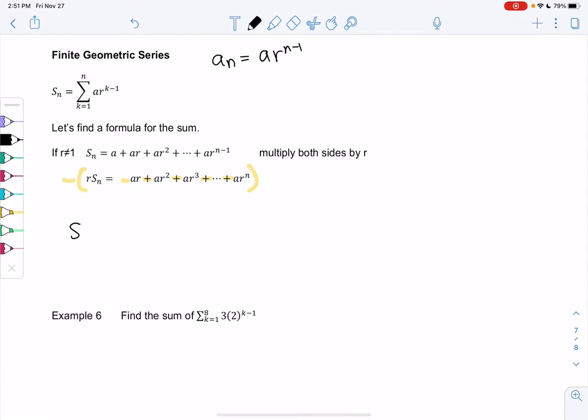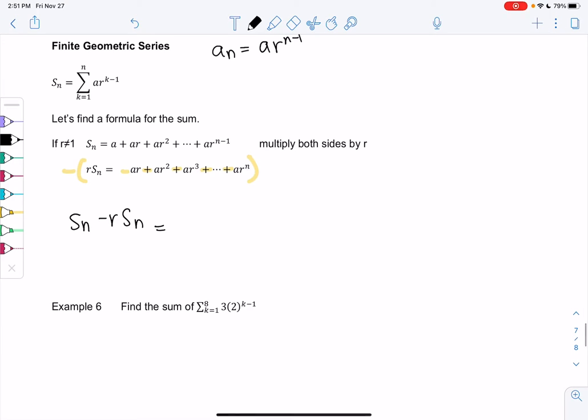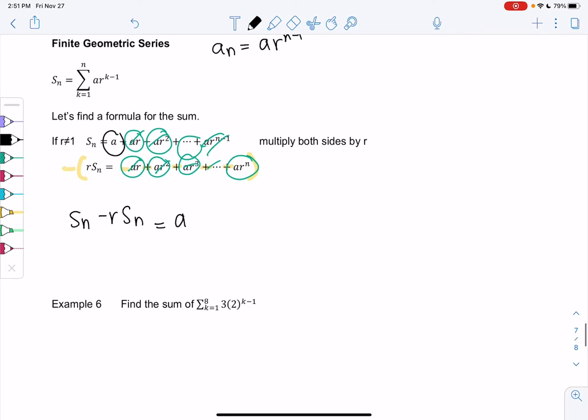We're going to do S_n minus rS_n equals a, and then ar and ar cancel out, ar squared cancels out. Everything will cancel out in the middle, and we'll only be left with the first term and the last term. So we'll get minus ar to the n because we were subtracting.